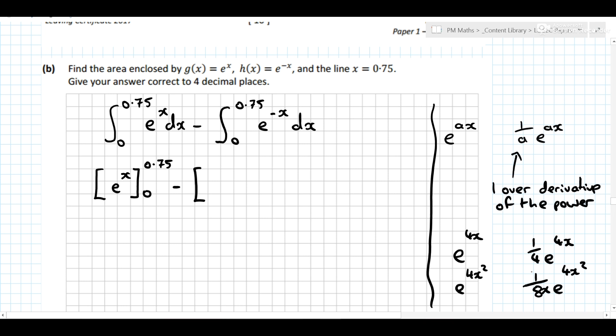Now again, it doesn't really matter here, but just to know that the rule is 1 over the derivative of the power, not just bringing down the coefficient of the power. So it's 1 over -1 times e^(-x) between 0.75 and 0, and this is just a minus here, so minus by minus e^(-x).